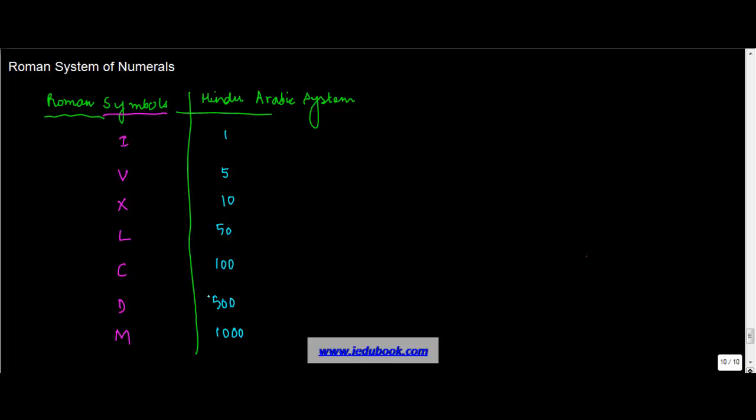Now let's say you have to write 15. Now 15 can be written as 10 plus 5. The way 10 is written here is X and then 5 is V. So 15 in Roman is written as XV. I am calling these as X or V, but basically, this is 15.